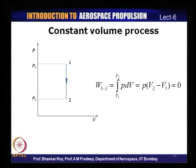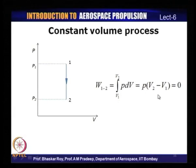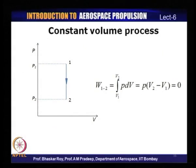For a constant volume process, V₁ equals V₂, so integrating P dV between states 1 and 2 gives zero, since there is no change in volume. Therefore, for a constant volume process the net work done is equal to zero — there is no displacement work done during a constant volume process.